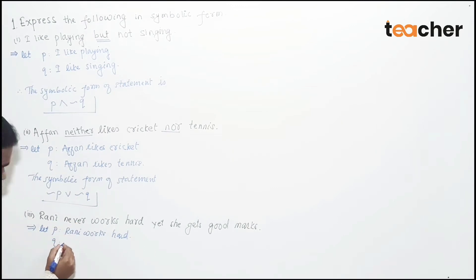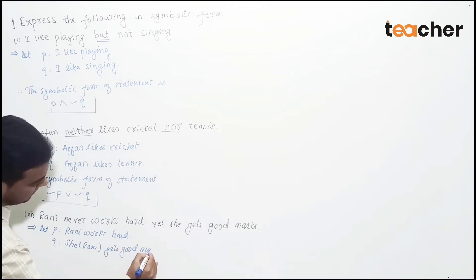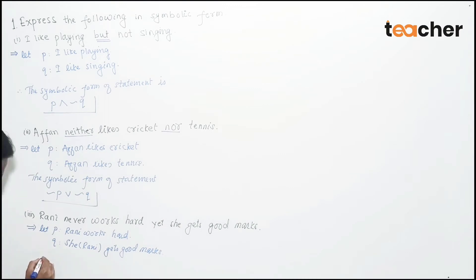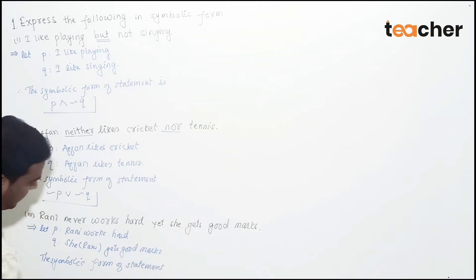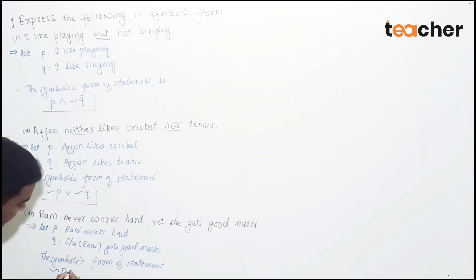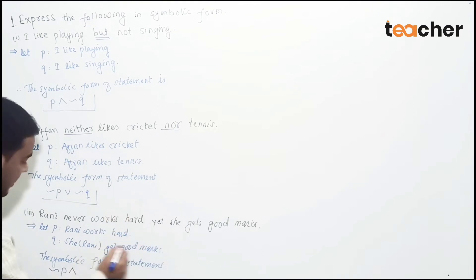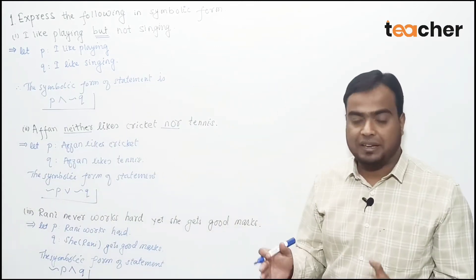Let Q represent 'Rani gets good marks.' The word 'yet' acts as a conjunction connective. Therefore the symbolic form of this statement is: (¬P) ∧ Q — negation of P conjunction Q. In this way we have solved examples showing how compound statements are written in symbolic form using different connectives.